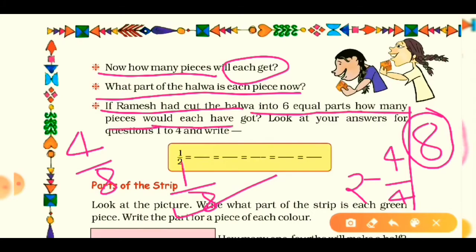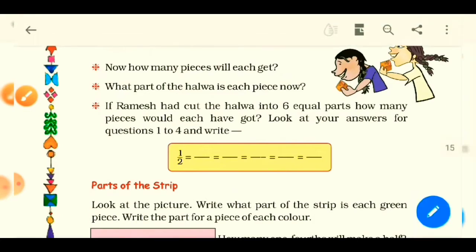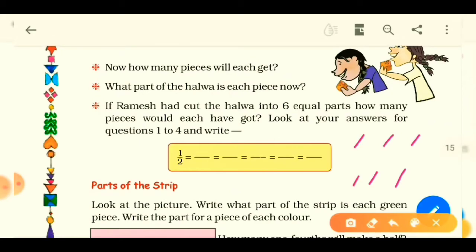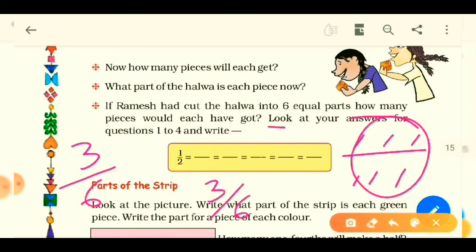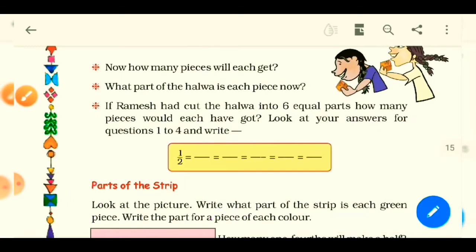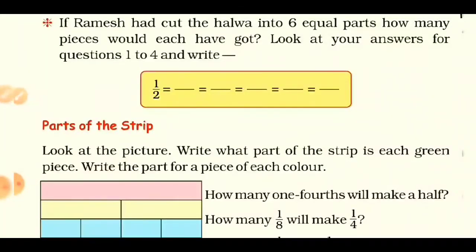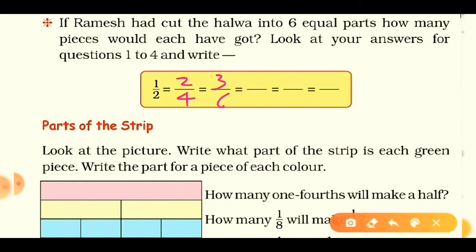If Ramesh had cut the halwa into six equal parts, how many pieces would each child get? Let's take six pieces: one, two, three, four, five, six. There are only two children, so each will get three pieces — that is three upon six. Ammu gets three-sixths and Anu also gets three-sixths.